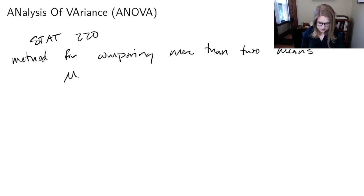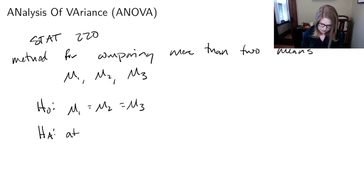So maybe you have means mu1, mu2, mu3, and you want to know if they're different. And the way that we set up our null and alternative hypotheses, our null was always all the means are equal. So mu1 is equal to mu2 is equal to mu3. And our alternative was at least one mu_i is different.